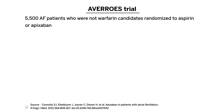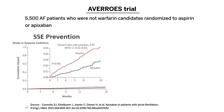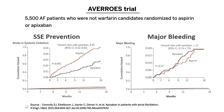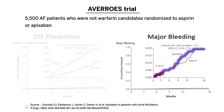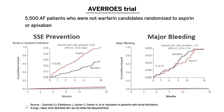When addressing bleeding risk with patients, I often mention the AVERROES trial. Published in 2011, it randomized 5,500 AFib patients who were not warfarin candidates to aspirin versus apixaban. They looked at the incidence of stroke or systemic embolism and major bleeding events. The trial showed that chances for stroke or systemic embolism were much lower in the apixaban group — which is not surprising — however, major bleeding events between the two groups were actually the same. I use that to tell patients that apixaban, when trialed against aspirin, had the same amount of bleeding complications as just taking aspirin.